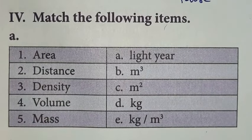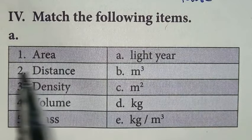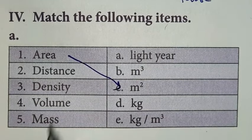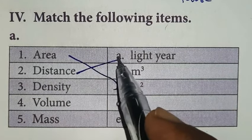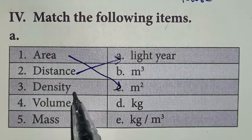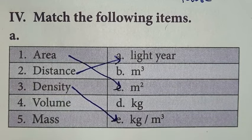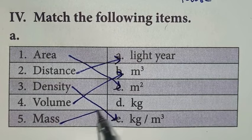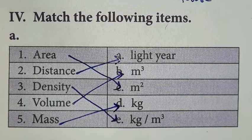Next, part four, match the following items. Area, its unit, meter square. Distance, light year. Density, kilogram per meter cube. Volume is meter cube. Mass unit is kg.